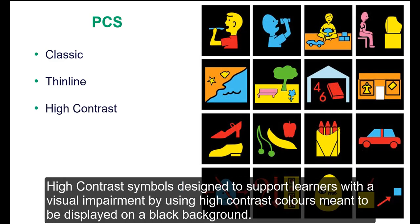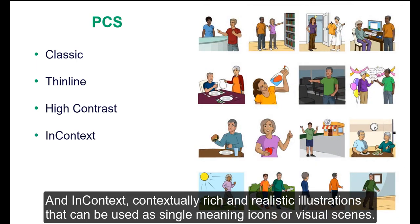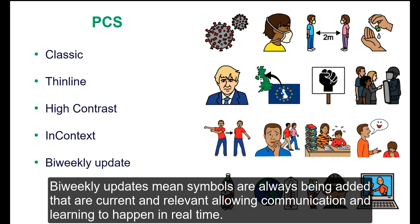High contrast symbols are designed to support learners with visual impairment by using high contrast colors meant to be displayed on a black background. And in context — contextually rich and realistic illustrations that can be used as single meaning icons or visual scenes. Bi-weekly updates means symbols are always being added that are current and relevant, allowing communication and learning to happen in real time.